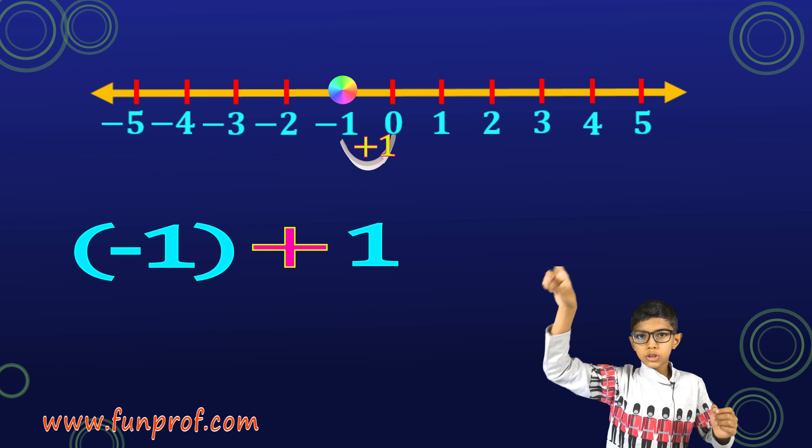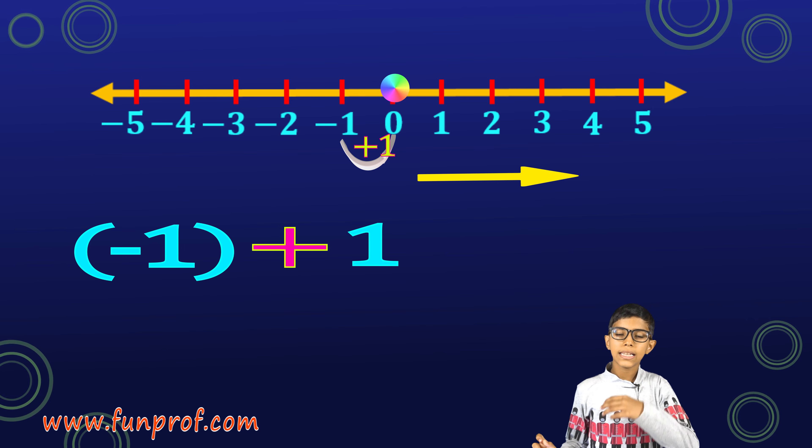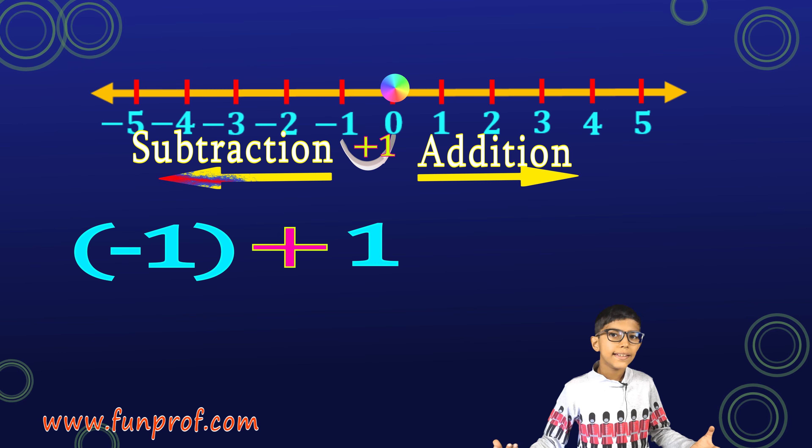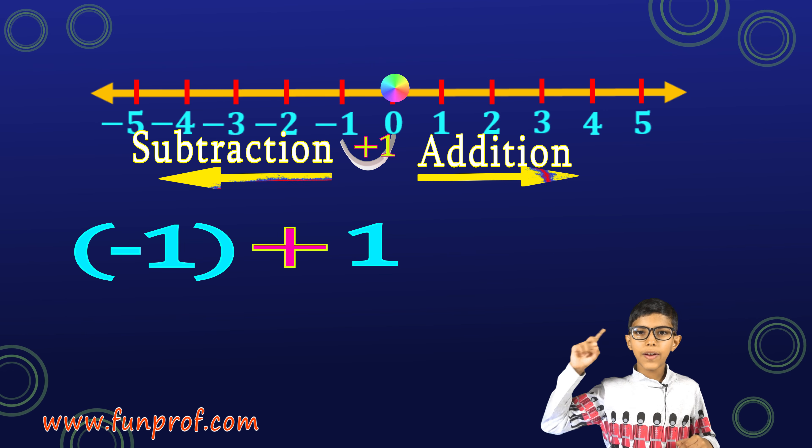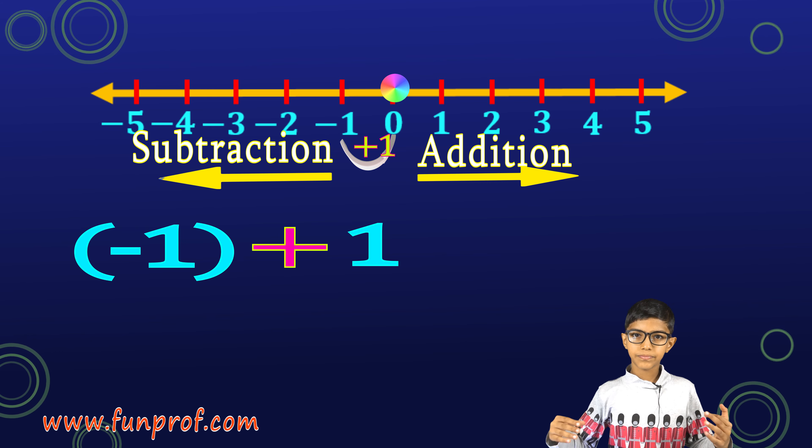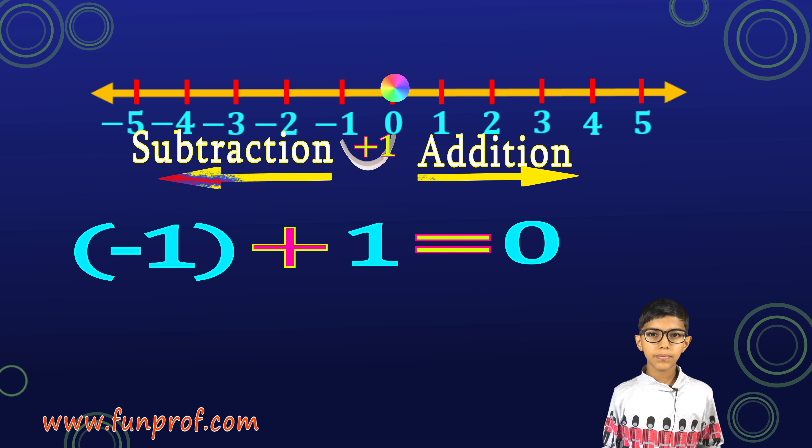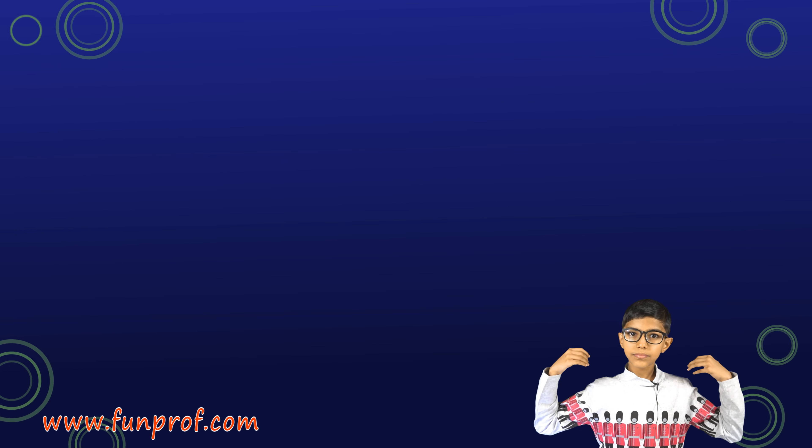We are on minus 1 and we add 1 to it. So, we jump to the right side. Left side, it's subtraction. Right side, it's addition. Remember that. Now, when I add 1, I get 0 because minus 1 plus 1 is 0.